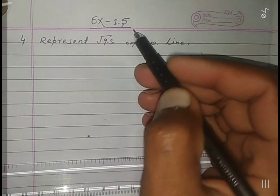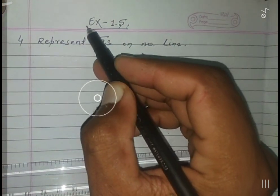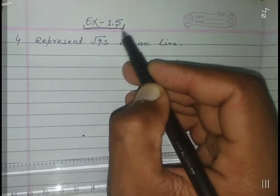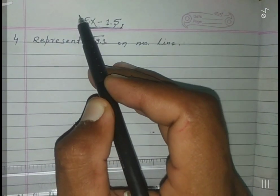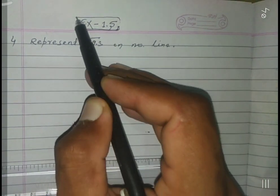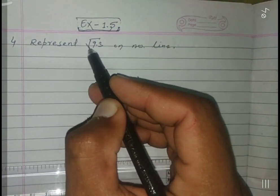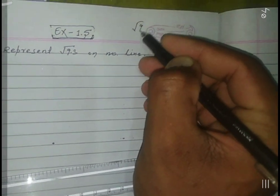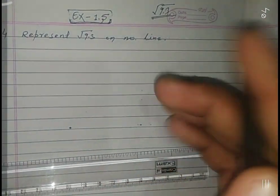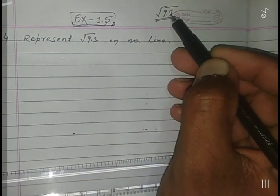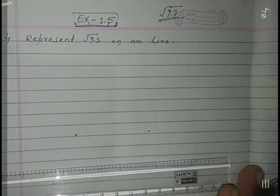Hello, good evening everyone. I am Vinaykumar. This is class 9th. Today we will learn exercise 1.5, how to represent a number. Here is √9.3 - how to represent √9.3 on number line.